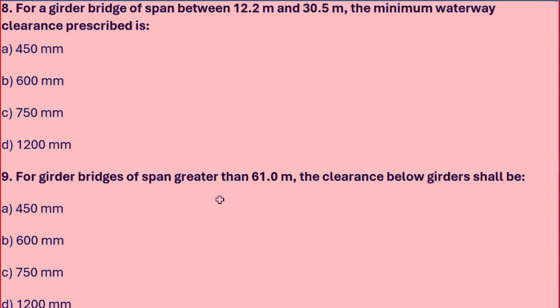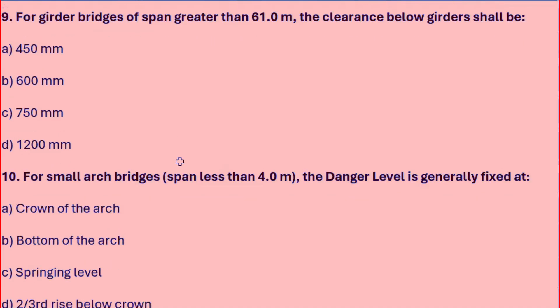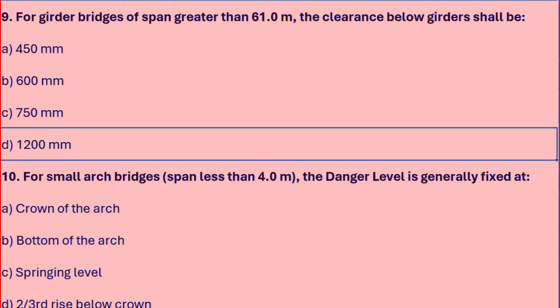For a girder bridge with a span between 12.2m and 30.5m, the minimum waterway clearance prescribed is 600mm. For a girder bridge with a span greater than 61m, the clearance below the girder shall be 1200mm.